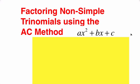Hello. In this video, we're going to learn how to factor non-simple trinomials using the AC method. If a trinomial has a coefficient of the squared term equal to 1 — that is, A equals 1 — then it's a simple trinomial and we don't need to use the AC method; you can just factor it by inspection. But if A is something other than 1, then it's best to use the AC method.